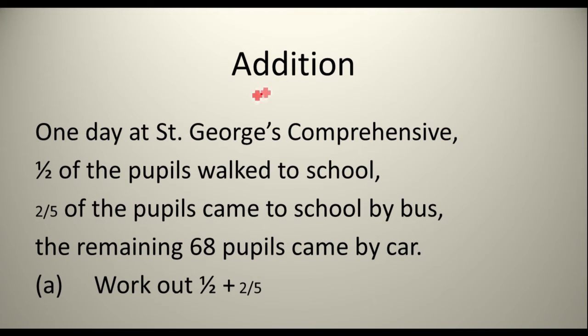So we're going to start off with addition which is probably one of the easiest ones. Here's an example. One day at St. George's Comprehensive, half of the pupils walked to school, two fifths of the pupils came to school by bus. The remaining 68 pupils came by car. Work out half plus two fifths.